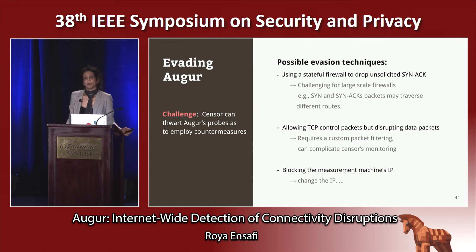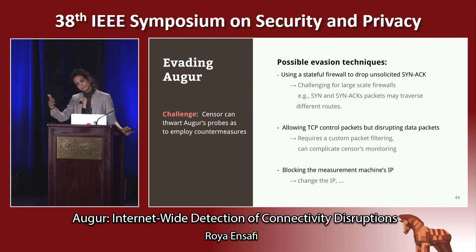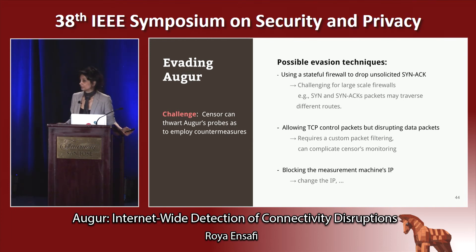One can ask: what if the technique becomes famous and censors start to evade it? Indeed, some adversaries can. For example, they can establish a stateful firewall and block unsolicited SYN-ACK packets, let TCP control packets through but block data packets, or simply block the measurement IP. We believe the first two are really challenging to implement at a national level. For the third, we can mitigate that by periodically changing the measurement machine's IP.